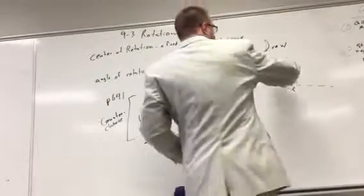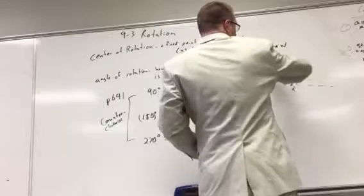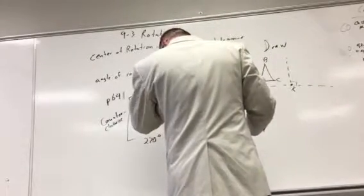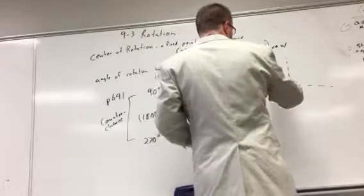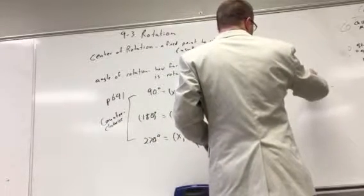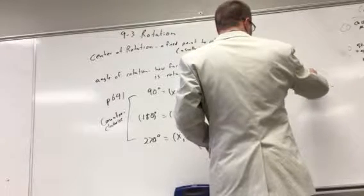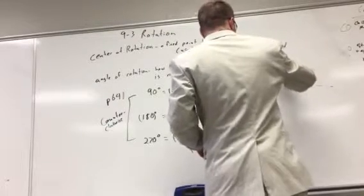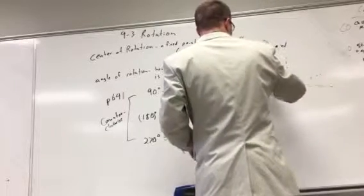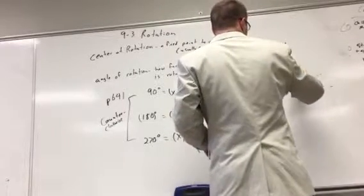Once we have that, we rotate each point across that 90 degrees. In this case, from here, we make that 90 degrees, it's going to be up like that. From here, we make the 90 degrees, it's going to be up here. From here, we make the 90 degrees, it's going to be up here.